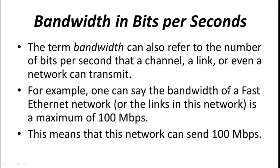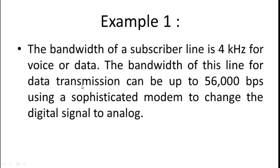Bandwidth in bits per second is the number of bits per second that a channel, a link, or even a network can transmit. For example, the bandwidth of a Fast Ethernet network is a maximum of 100 Mbps, meaning this network can send 100 megabits per second. The bandwidth of a subscriber line is four kilohertz for voice or data, and the bandwidth of this line for data transmission can be up to 56,000 bits per second.